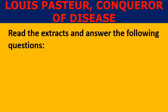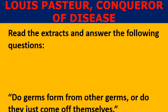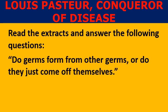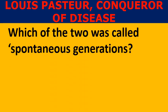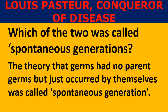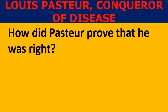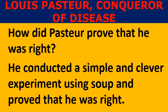Read the extracts and answer the following questions. Do germs form from other germs, or do they just come off by themselves? Which of the two was called spontaneous generation? The theory that germs had no parent germs but just occurred by themselves was called spontaneous generation. How did Pasteur prove that he was right? He conducted a simple and clever experiment using soup and proved that he was right.